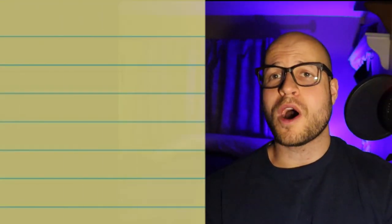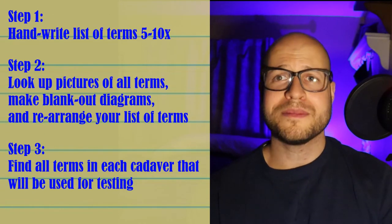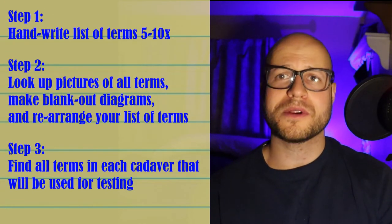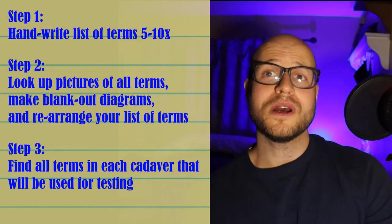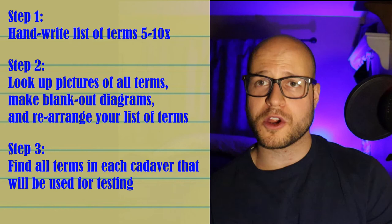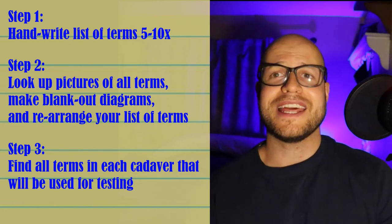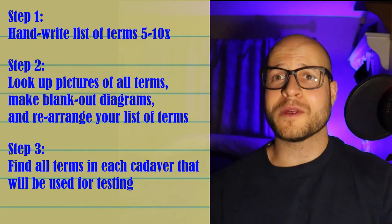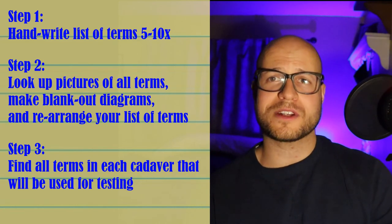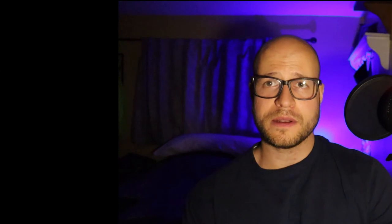Alright, let's recap. In step one, we got very comfortable with the terms — writing them, sounding them out, what they look like on paper. In step two, we made very high-quality associations between the terms and what the body part actually looks like. And in step three, we went to the lab and got really comfortable with what all these body parts actually look like in every body we might be tested on. Just remember that for people like us who are not national merit memorizers — maybe English is your second language like it is for me — learning anatomy is hard, but it can be done with enough patience and hard work. So go get your laptop, your list of terms, your anatomy book, and go get that 4.0.